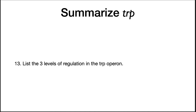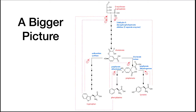Summarize tryptophan. Here is an example of a useful activity you can do to improve your studying. Take a moment and summarize the three levels of regulation in the tryptophan operon. When you are actually watching these videos, it is a good idea to stop them and summarize concepts as you go through. The last section finished up talking about the tryptophan operon.